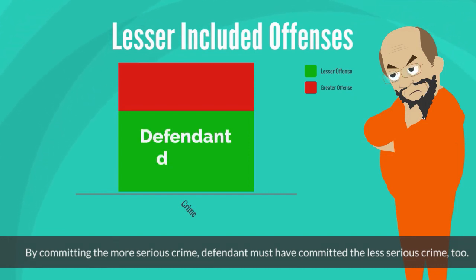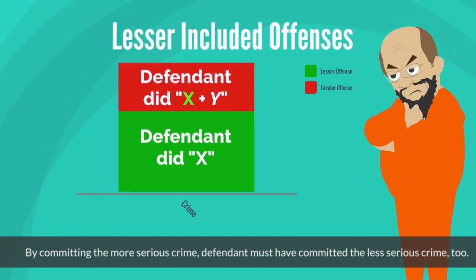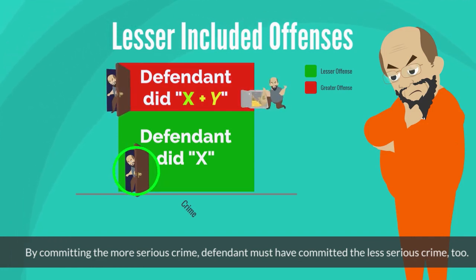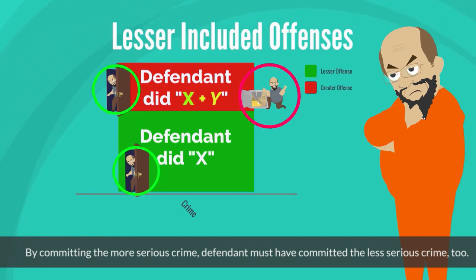For example, if the element of a less serious crime involves the defendant doing X, and the more serious crime involves the elements of the defendant doing both X and Y, then the defendant must have also committed the less serious offense when he committed the more serious offense. Because in both cases, the defendant must have at least committed X.